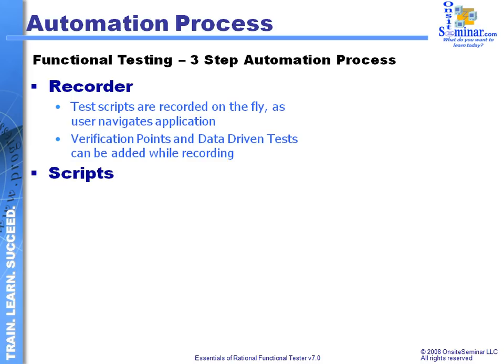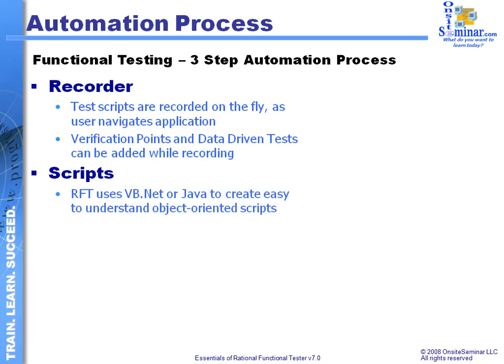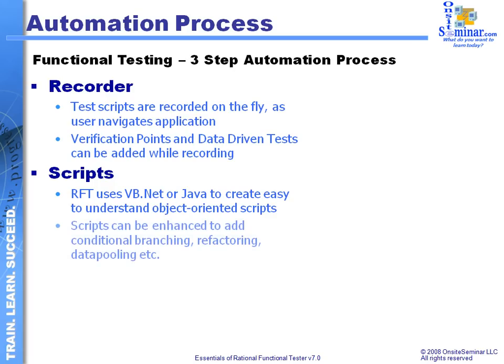Once I've gone through the recording process, what we're creating is this concept of a script. As the keystrokes are being recorded, this information is captured in the script program in the Rational Functional Tester, and it's going to basically build an OVO type of a script program. We can use .NET or Java to create these different kinds of scripts.